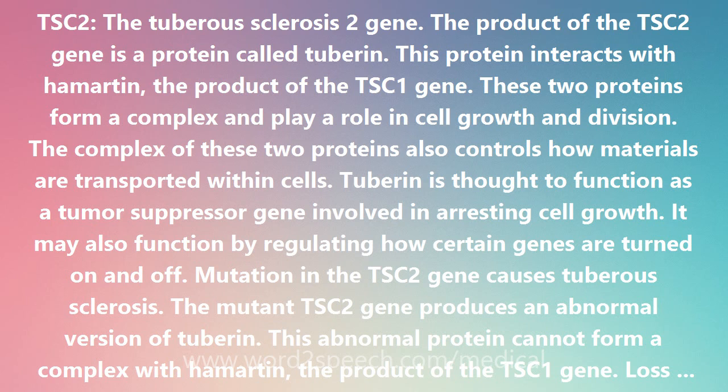The complex of these two proteins also controls how materials are transported within cells. Tuberin is thought to function as a tumor suppressor gene involved in arresting cell growth. It may also function by regulating how certain genes are turned on and off.